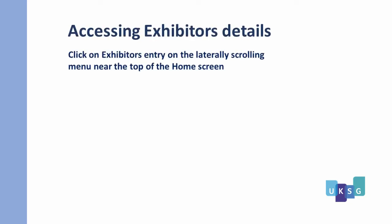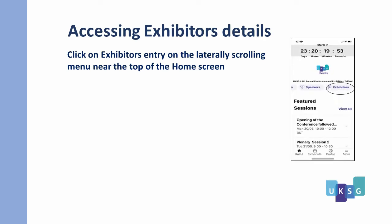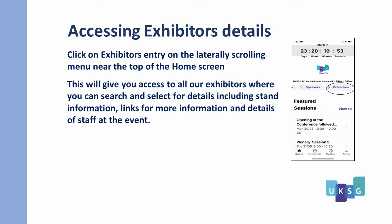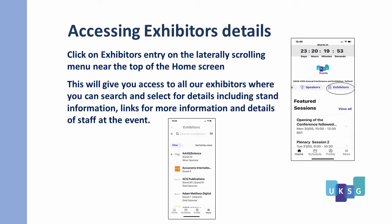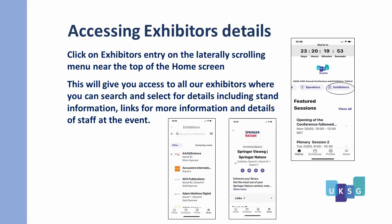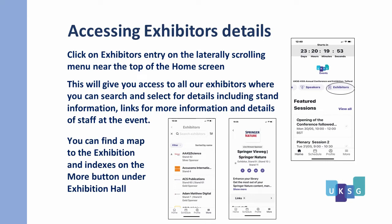For Exhibitors details, click on the Exhibitors entry on the laterally scrolling menu near the top of the home screen. This will give you access to all our exhibitors where you can search and select for their details including stand information, links for more information and details of staff at the event. You can find a map to the Exhibition and indexes to the stands on the More button under Exhibition Hall.